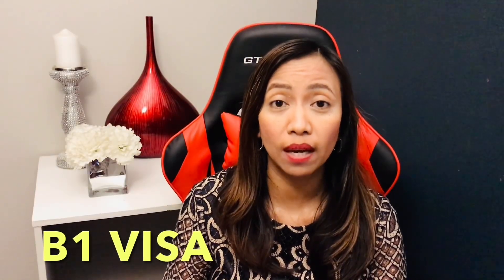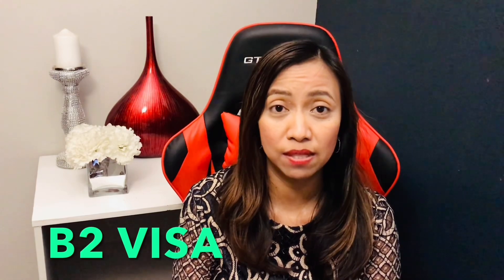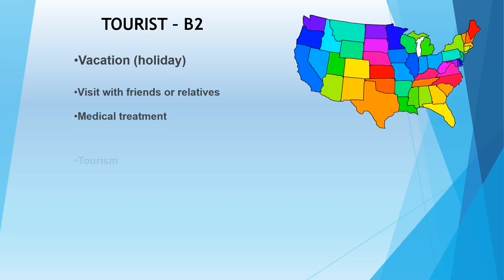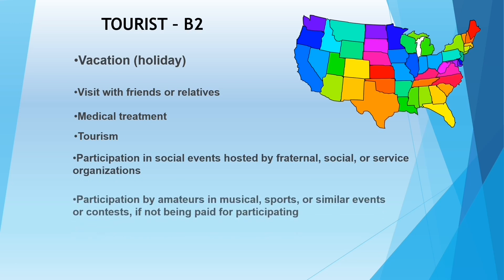Most of the time, consulates issue a B1/B2 combination visa. For the B1 visa, covered activities include attending a scientific, educational, professional, or business convention; negotiating a contract; settling an estate; or consulting with business associates. For the B2 tourist visa, covered activities include vacation, visiting friends, medical treatment, tourism, and participation in social or similar events.